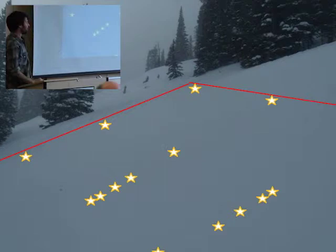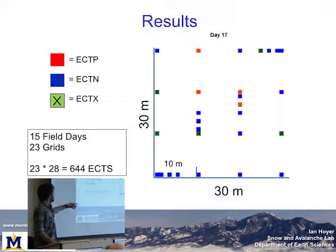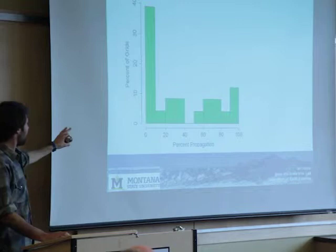This is up by Fairy Lake — those stars show where all my ECTs are located across the slope. It was a 30 by 30 meter grid. I had 15 field days with 23 grids of ECTs, so something in the order of 650 ECTs for this dataset.